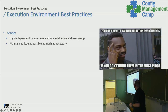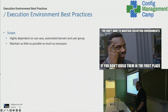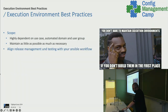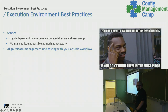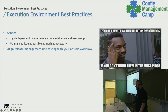About scoping: if you don't have to maintain execution environments, you don't have to maintain them — if you don't build them in the first place. Think about execution environments as a tool that shouldn't break your process or slow you down. Maintain as little as possible, but as much as necessary. Also, align release management and testing with your Ansible workflow. I see projects where people build an execution environment and push it to every stage at the same time — that shouldn't be the case. Build it, test it thoroughly, and then it should follow the rest of your release management.